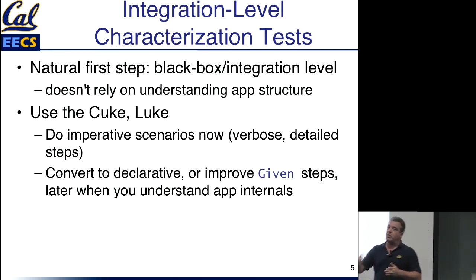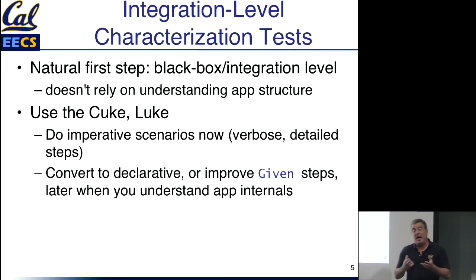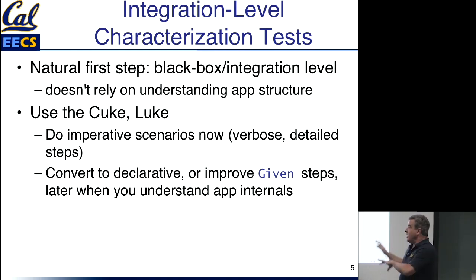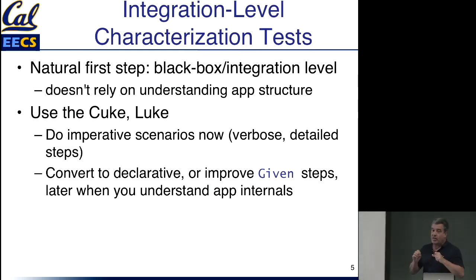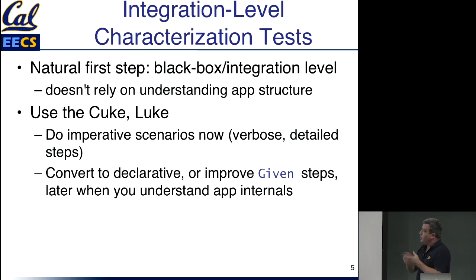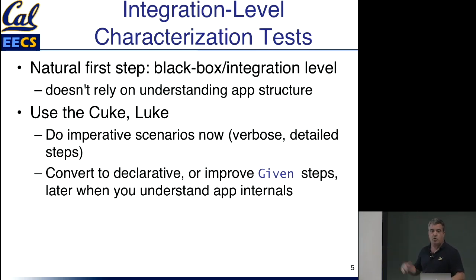At first, you can write one of those really detailed step-by-step tests — 'I fill in this, I fill in this, I click that' — the kind of Cucumber test you generally want to avoid. But at this stage, it's a useful way to automate what you've just done manually. You did some workflow with the app; it increased your understanding of what that part of the app does. Write a Cucumber scenario to make that repeatable. Later on, you can clean it up and convert it to higher-level steps as you better understand the app.